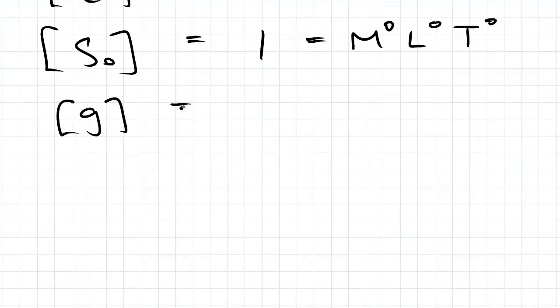Gravity is meters per second squared, which is L to the one, T to the minus two.